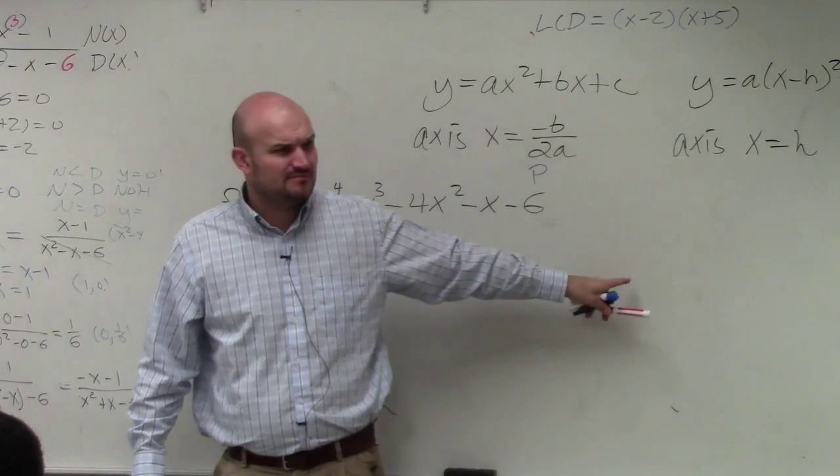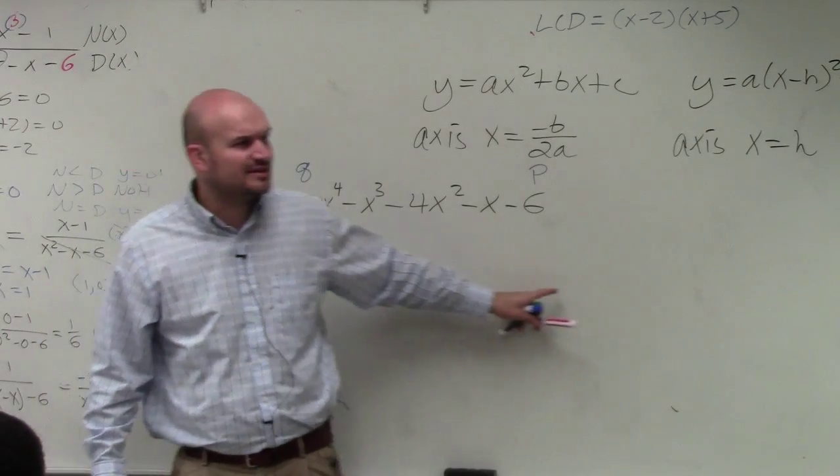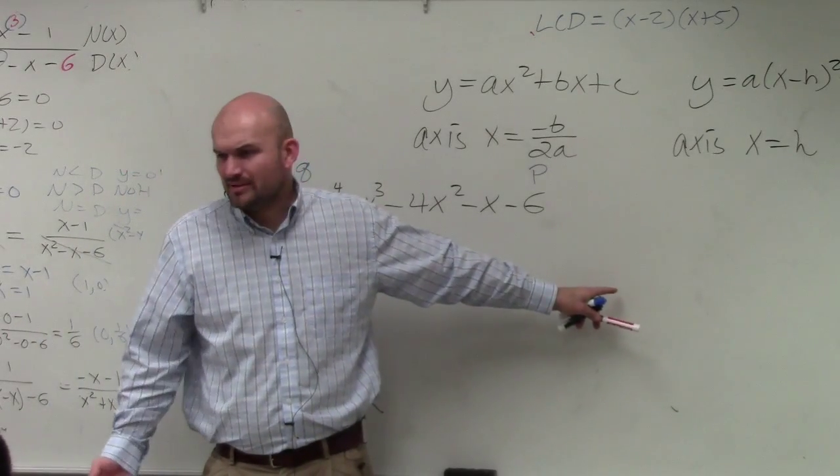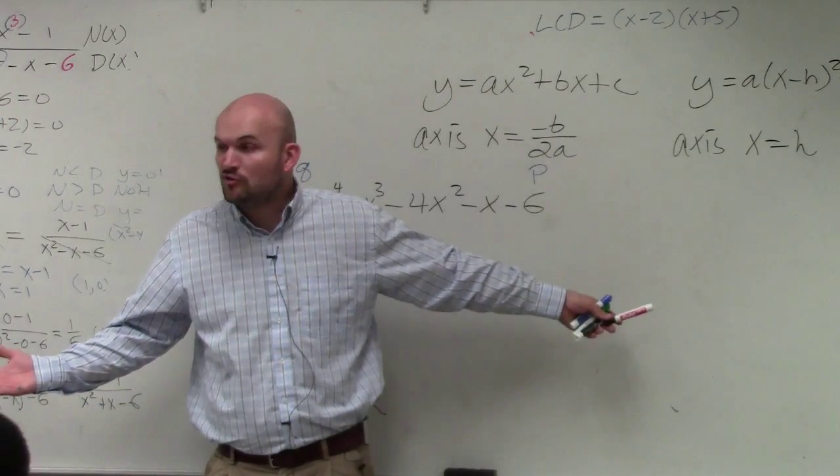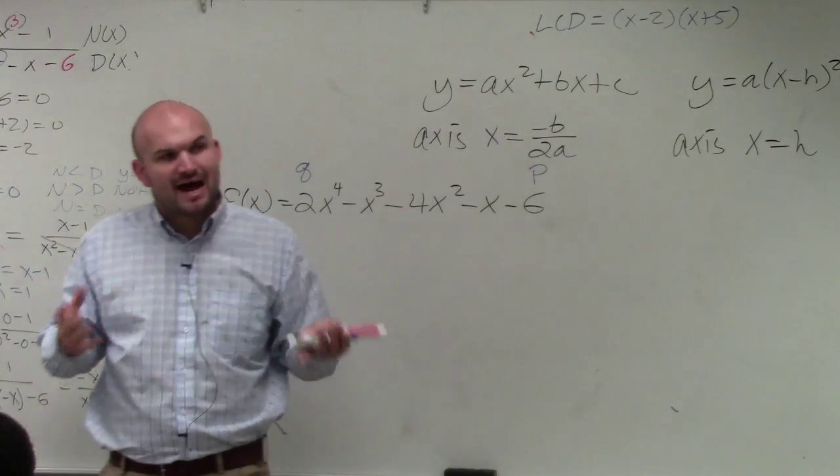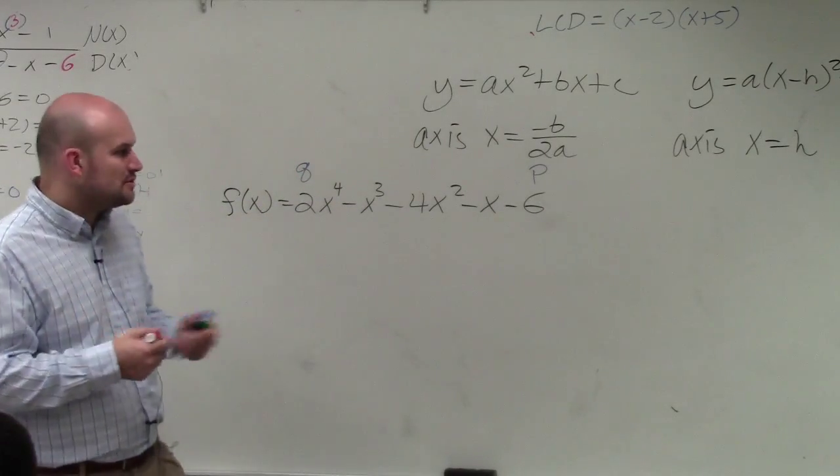But how many did I have there? How many total numbers did I have? Like six? Probably? Six or something? So if you do the positive and the negative, that's like a possibility of 12, right? Well, what's another way that you can help yourself out determine what types of zeros you have?